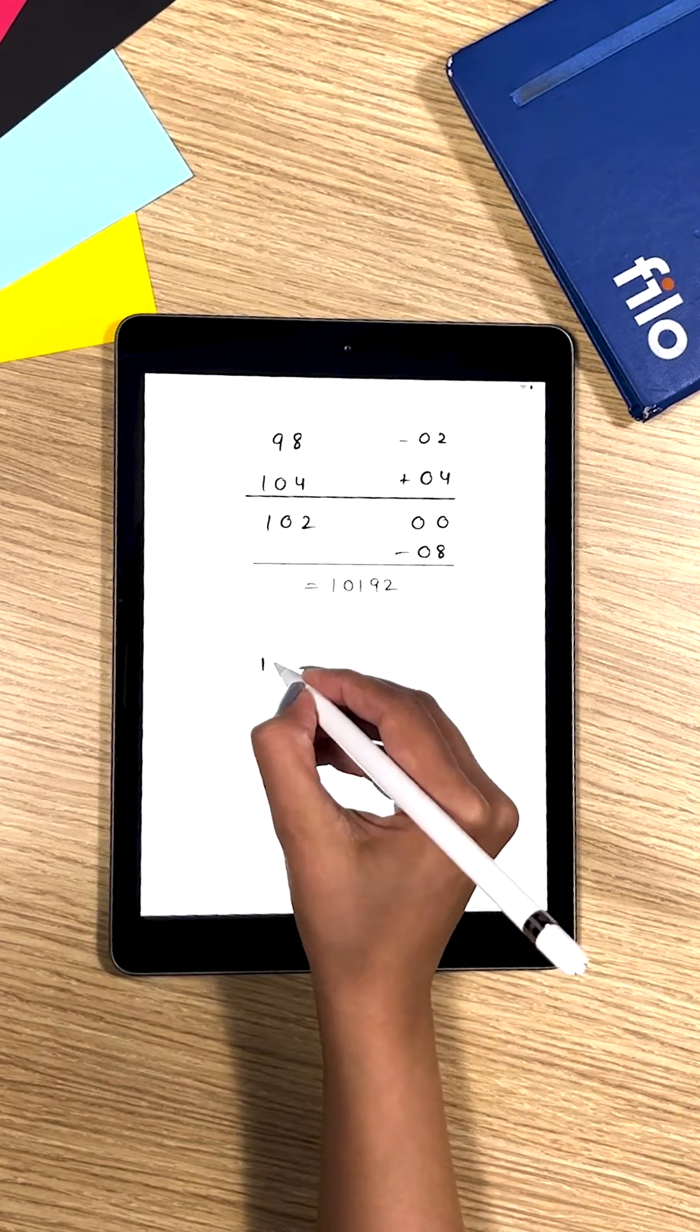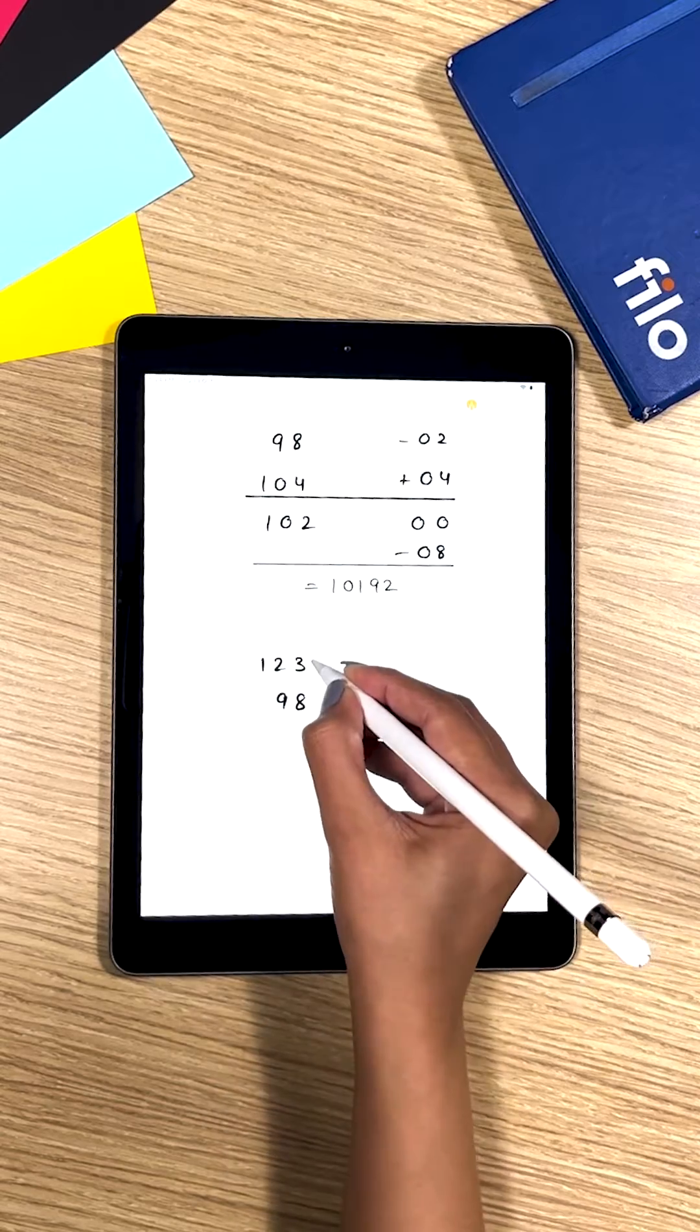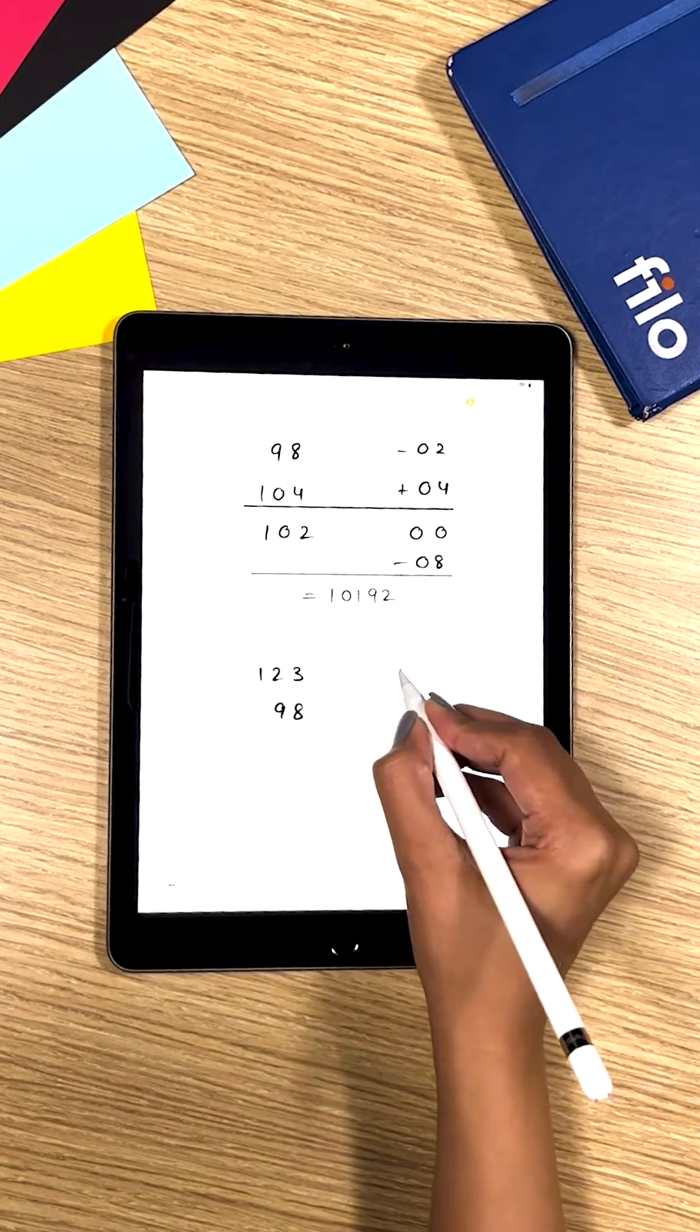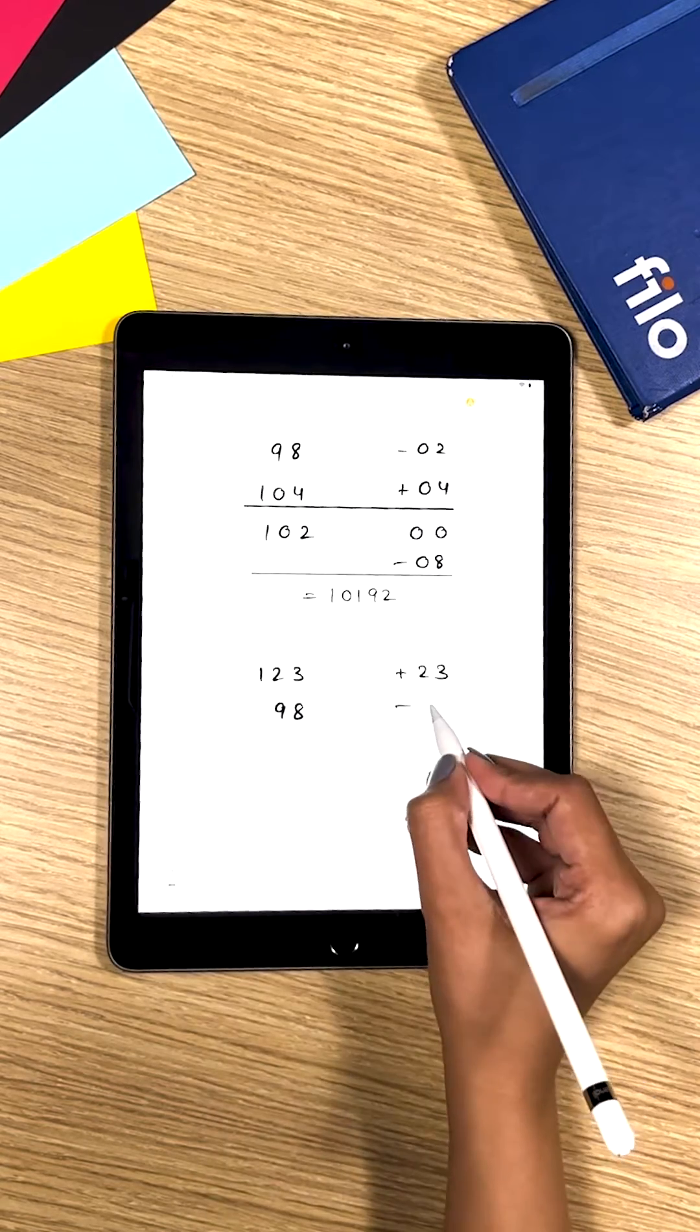Then you tried the same problem with much more complex number that is 123 times 98. Now you can see that 123 is 23 more than 100 and 98 is 2 less than 100.